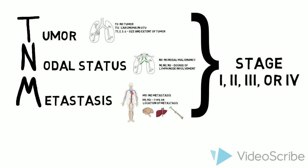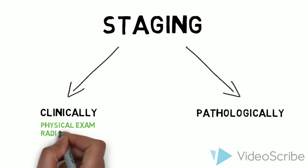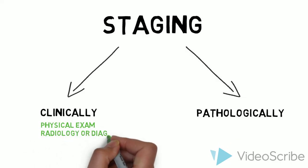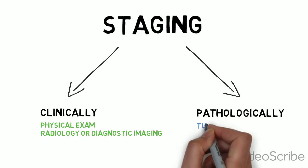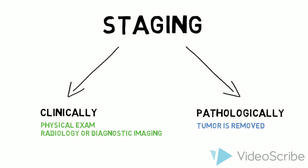Staging can be done both clinically and pathologically. Clinical staging uses the features of clinical or physical exam as well as radiology and diagnostic imaging. Pathological staging assumes that the tumor has been removed and often the local lymph nodes are sampled — this is how we arrive at pathological staging.